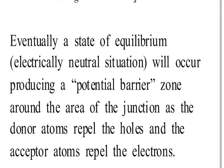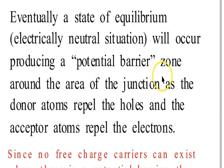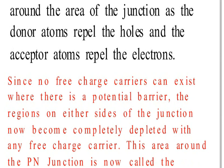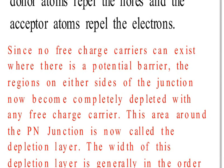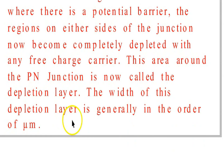Therefore, a state of equilibrium — that means an electrically neutral situation — will occur, producing a potential barrier around the area of the junction, as the donor atoms repel the holes and the acceptor atoms repel the electrons. Since no free charge carrier can exist where there is a potential barrier, the region on either side of the junction becomes completely depleted of any free charge carriers. This area around the P-N junction is now called the depletion layer, and its width depends on the doping of the junction.